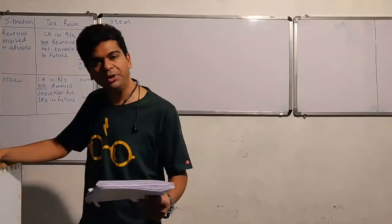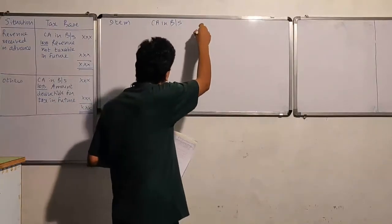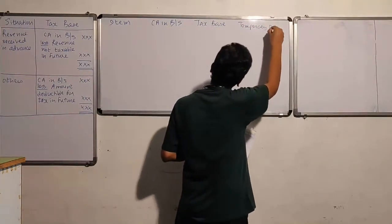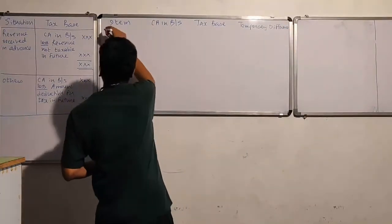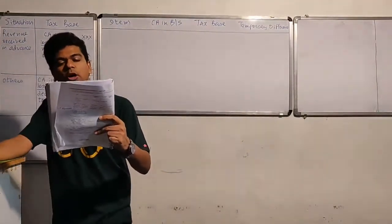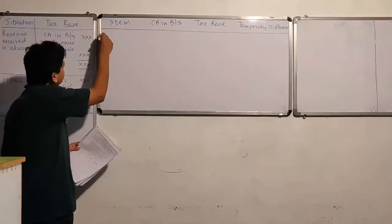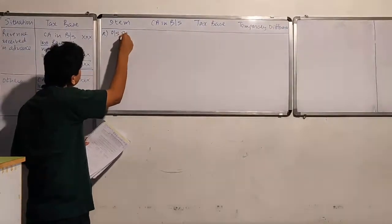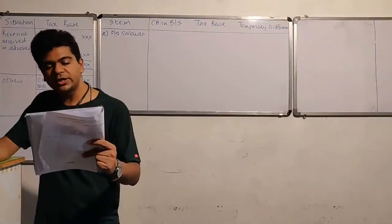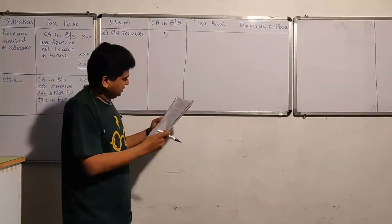Item-wise, I want to know what is the carrying amount in the balance sheet, what will be the tax base, and what shall be the temporary difference. Item A: current liabilities include outstanding salaries of rupees five lakhs, which has already been deducted for tax. So the carrying amount in the balance sheet is five lakhs.